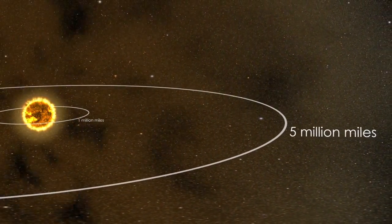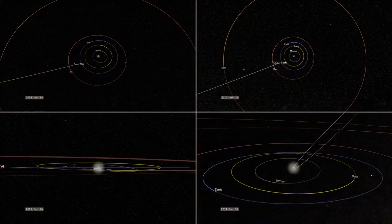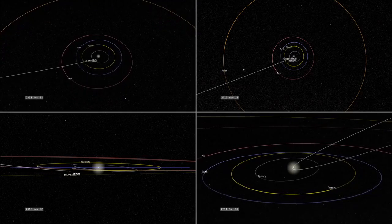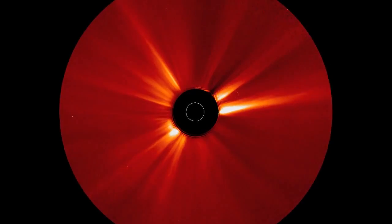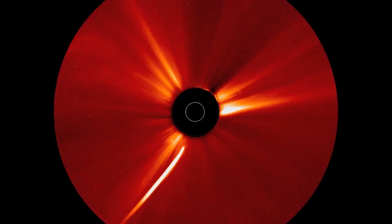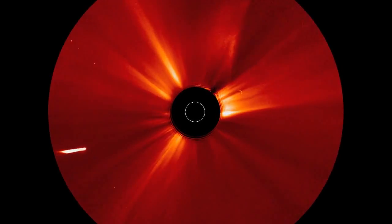Because of this, researchers will be watching ISON and other sungrazing comets very closely. And since we are in a period of high sungrazing comet activity, scientists can expect many more chances to watch these beautiful, natural research satellites in the coming years.